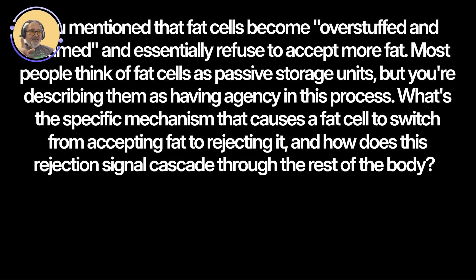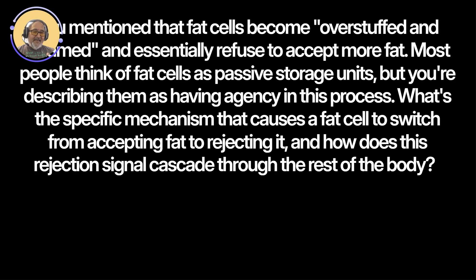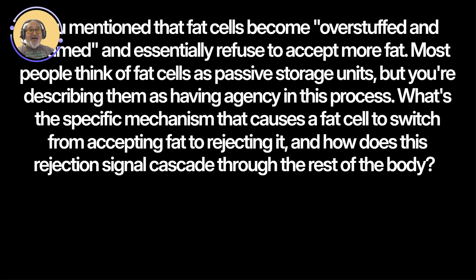Here's the question: you mentioned that fat cells become overstuffed and inflamed and essentially refuse to accept more fat. Most people think of fat cells as passive storage units, but you're describing them as having agency in the process. What's the specific mechanism that causes a fat cell to switch from accepting fat to rejecting it? And how does this rejection signal cascade through the rest of the body?